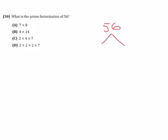So 56, well, I know that it is divisible by 7 and 8. 7 times 8 makes 56. 7 is prime, so we stop there, but 8 is not prime. We can keep going.